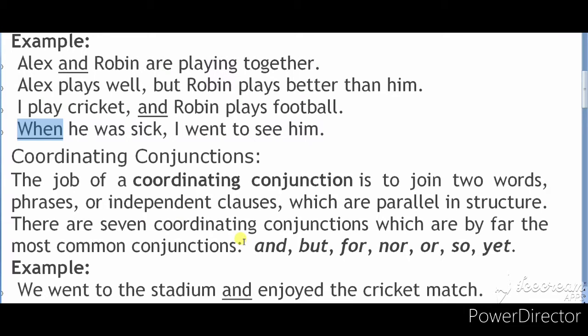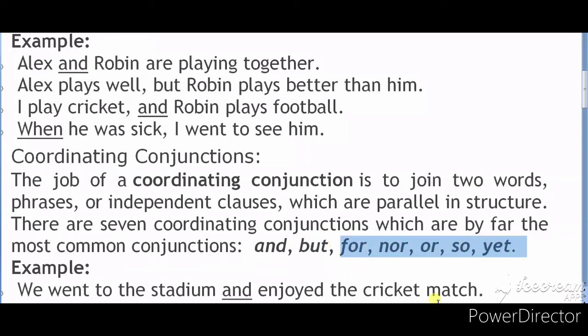Now, the coordinating conjunction. You have to remember the coordinating conjunctions, which are: and, but, for, nor, or, so, yet. This is the coordinating conjunction — and, but, for, nor, or, so, yet.